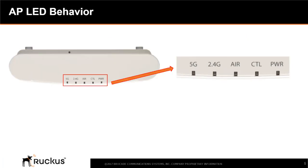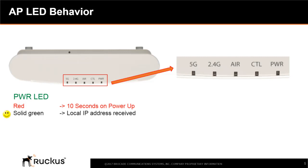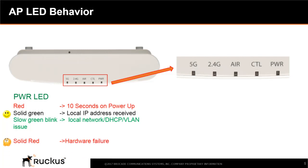If the AP has already been added and configured on the cloud controller, the following actions should take place. When powering up, the access point performs a series of hardware tests. During this time, the power LED turns red for approximately 10 seconds. Once a local IP address is received, the power LED turns solid green. If the power LED keeps blinking green slowly, this indicates a local network switching issue such as a DHCP or VLAN configuration. If the power LED remains solid red, this indicates a hardware failure and the AP must be RMA'd for replacement.